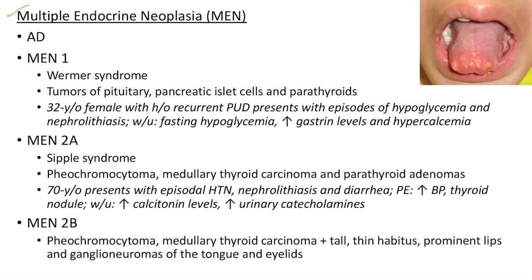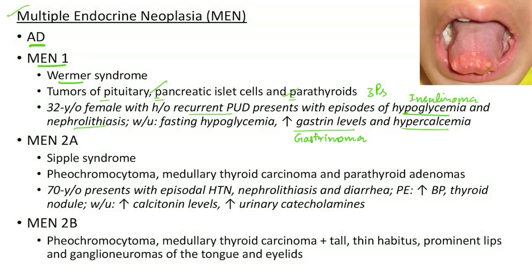Now let us discuss about multiple endocrine neoplasia (MEN). These are autosomal dominant conditions. MEN1, also known as Wermer's syndrome, involves tumors of the pituitary, pancreatic islets and parathyroids — remembered by the mnemonic 3Ps. Clinical case: A 32-year-old female with history of recurrent peptic ulcer disease presents with episodes of hypoglycemia and nephrolithiasis. Workup shows fasting hypoglycemia, elevated gastrin levels and hypercalcemia. Recurrent peptic ulcer disease with elevated gastrin levels suggest gastrinoma; hypoglycemia suggests insulinoma — both pancreatic islet cell tumors. Hypercalcemia and nephrolithiasis suggest parathyroid adenoma. This is a classic case of MEN1.